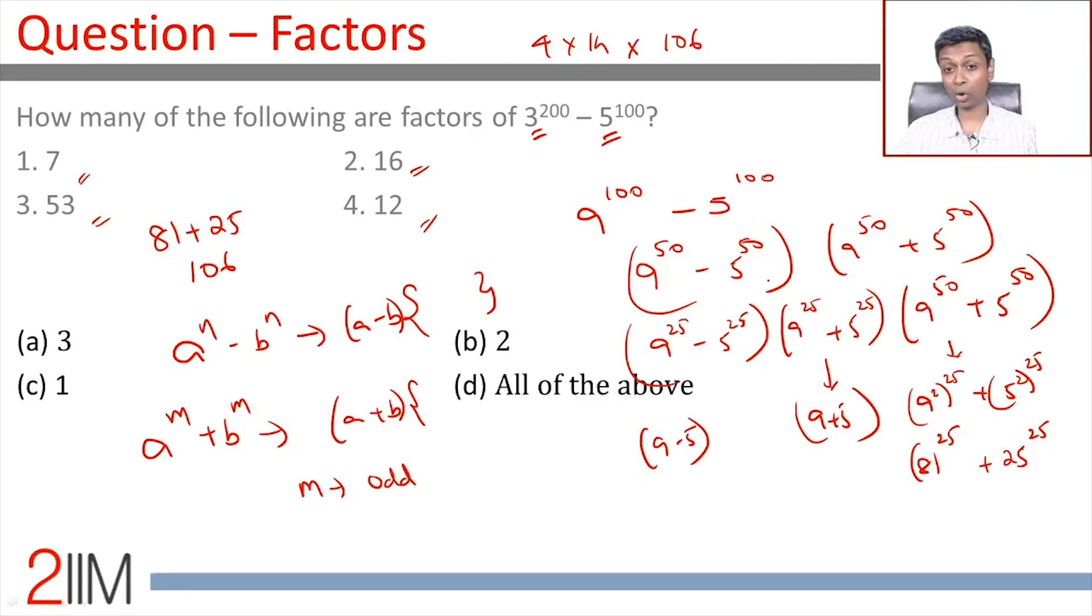Let us look at this and see if we can go after these choices. How many of the following are factors? Definitely, 7 is a factor because it's a multiple of 14. Is 16 a factor? We get 4 from here, 2 from here, 2 from here. Yeah, this also works. 53, is it a factor? 106 is 53 × 2. This also works.